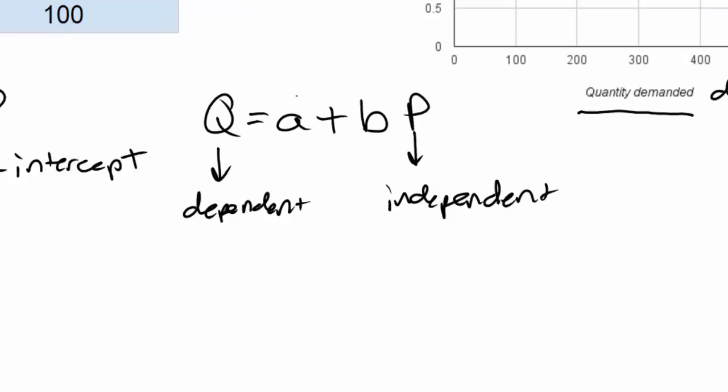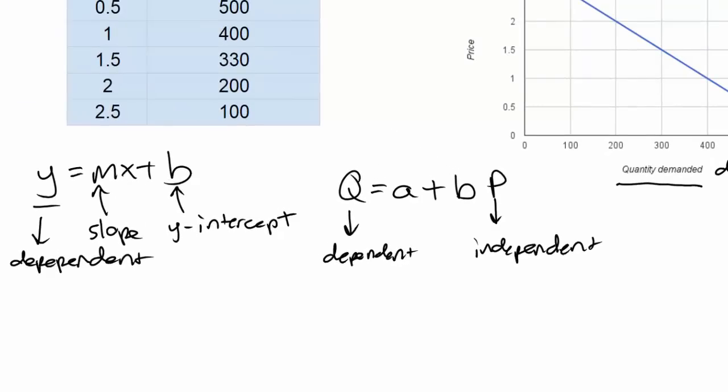We've got a couple other values in here as well. Whereas the b variable in our y equals mx plus b is the y intercept, in our demand equation the a variable is our Q intercept or the x intercept. This is the quantity demanded when the price is zero.